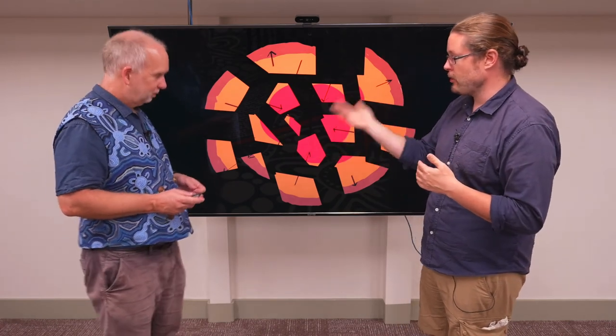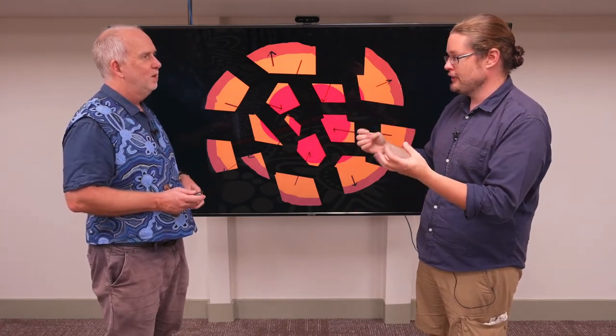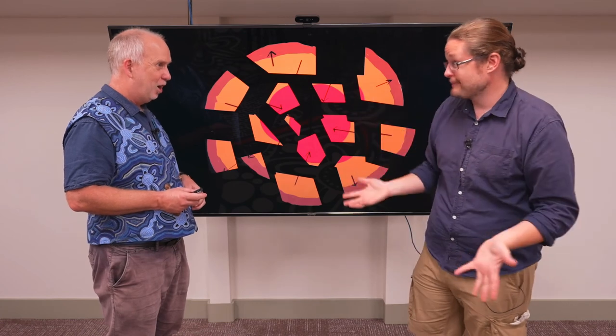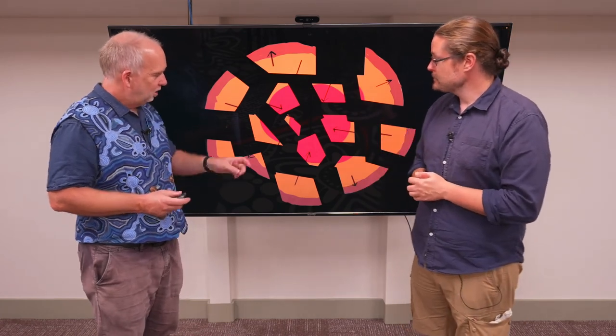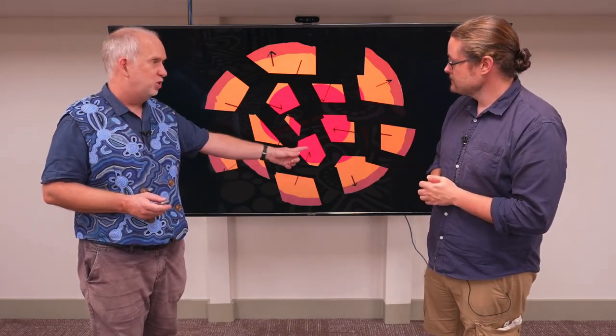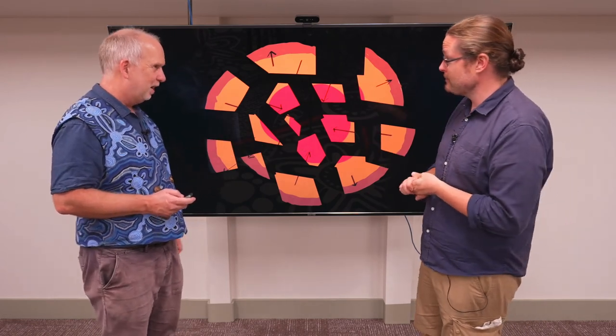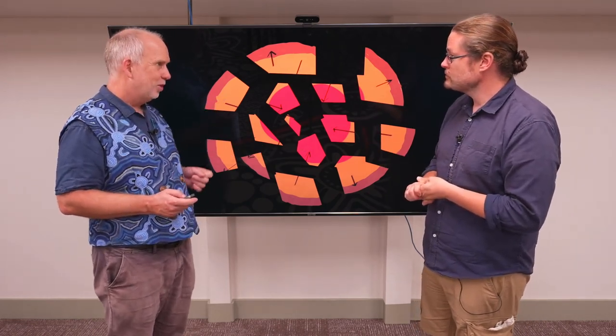They would have solidified way quicker than what we had on Earth, so when it broke apart, it would break apart as solid chunks rather than liquid. What we think is that the chunks originally in the middle are now the metal-type, the X-type, and the chunks from the outside are the stony ones.